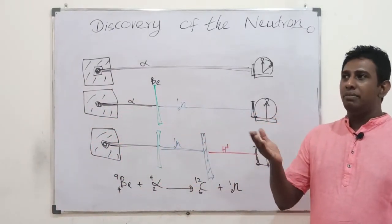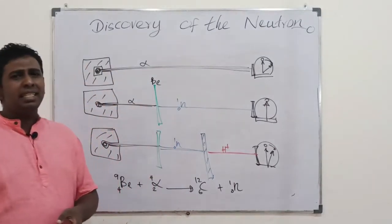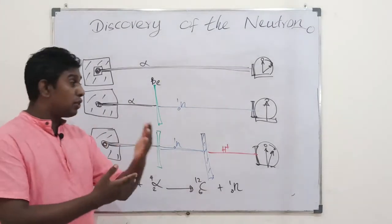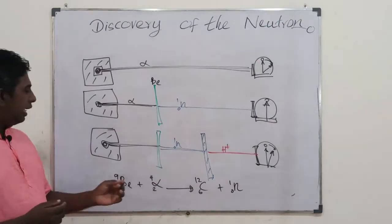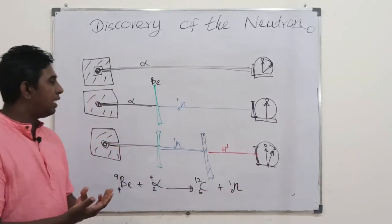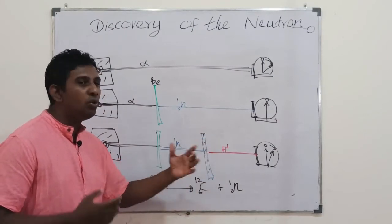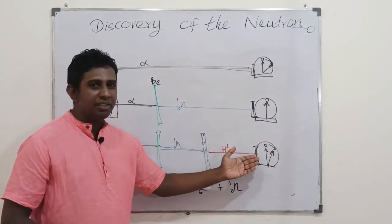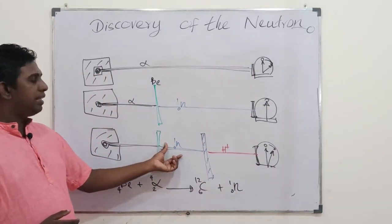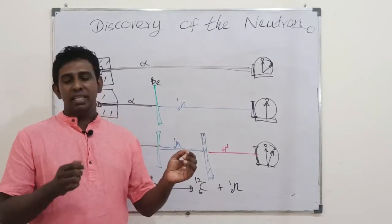This neutral particle — with no charge and no atomic number — was named the neutron. The neutrons emitted from the beryllium reaction struck the paraffin wax layer, knocking loose hydrogen ions (H⁺ protons) from the hydrocarbons. These positively charged protons then reached the detector and gave a reading. Chadwick thus explained that neutral particles exist within atoms, and they were named neutrons.